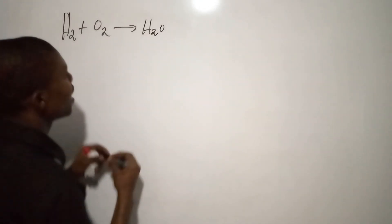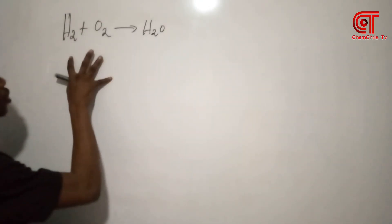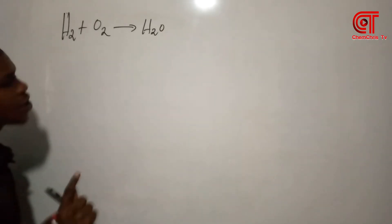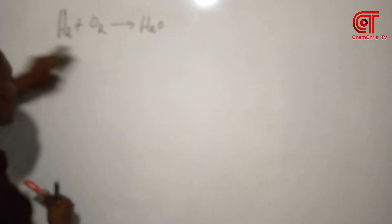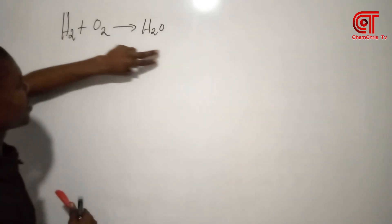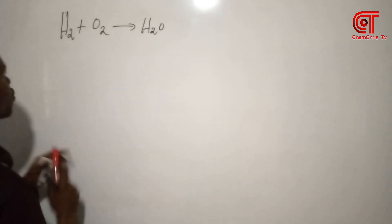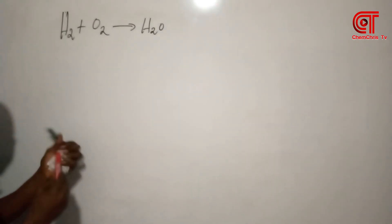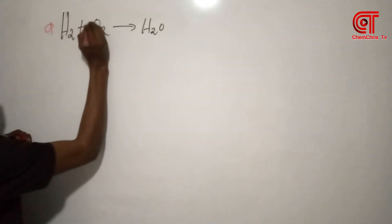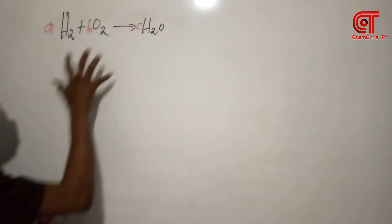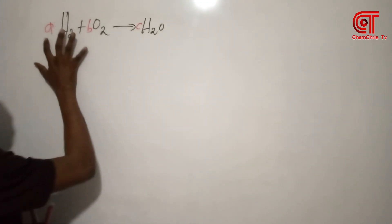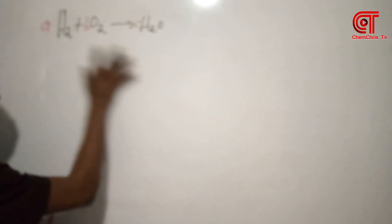Let's start with a simple reaction: H₂ plus O₂ gives us H₂O. Now how can we use the Ojibre method to balance this simple one? First, you want to assign alphabets to all the species — both the reactants and products. So I can assign A, B, and C. This is the first step: assign alphabets to all the species.